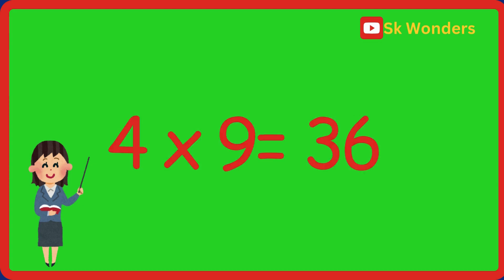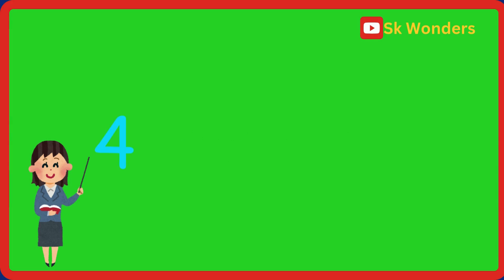Four times nine is thirty-six. Four times nine is thirty-six. Four times ten is forty. Four times ten is forty.